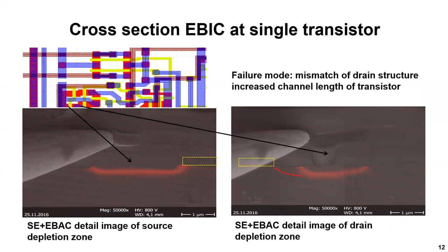Unfortunately, the contrast of the SEM image is a little bit less, so a yellow dotted line is used to emphasize the position of the polysilicon gate. At the drain structure, the IBIC image looks different — the left edge of the depletion zone is much closer to the contact. The gate is again marked with the yellow dotted line, and the red dotted line shows the normal position of the depletion zone. In general, the doped structure exists, but the shape fails, so the transistor shows no leakage. However, the increased channel length due to the smaller doped drain area could explain the increased threshold voltage and reduced output level. These two examples — one for top-down and one for cross-section view — demonstrate the ability to investigate doped areas of single structures by IBIC.